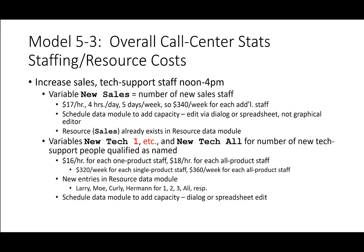To increase sales and tech support staff at the noon-to-4 time slot, add a variable 'new sales' for the number of new sales staff at $17 per hour, four hours per day, five days per week — adding $340 per week for each additional staff. The schedule data module adds capacity via dialogue or spreadsheet, not the graphical editor. For new tech support variables — new tech 1, 2, 3, and new tech all — single-product staff cost $16/hour ($320/week) and all-product staff cost $18/hour ($360/week). We can also increase trunk lines beyond 26 at a flat rate of $98 each. Add the expression 'new res cost' for all resource costs, such as new sales times the relevant cost factors — this depends only on setup, not simulation results.